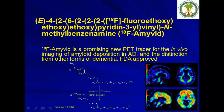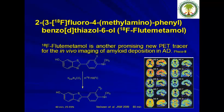F18-Amyvid is another radiopharmaceutical recently approved by the FDA. Amyvid is a promising PET radiotracer for in vivo imaging of amyloid deposition in Alzheimer's disease and for distinguishing it from other forms of dementia. Recent images taken using this radiotracer are shown here. Production is straightforward, taking 30 to 40 minutes.